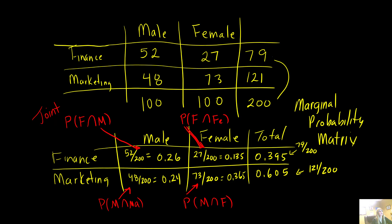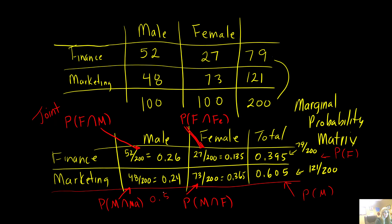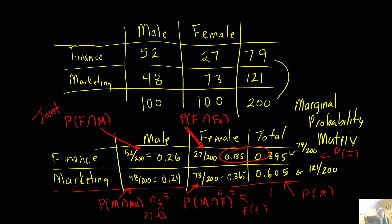These values here at the end are just the probability of finance and the probability of marketing. If I add my totals — 0.26 plus 0.24 I get 0.5, and 0.135 plus 0.365 I get 0.5. All probabilities should add to one. Then these would be the probability of a male and the probability of a female. So I could look at this table and say: if I have a class of 200 students, what's the probability of getting a student who is a finance major and female? That would be that value there.